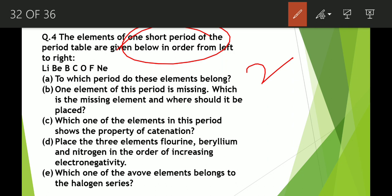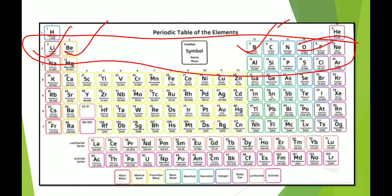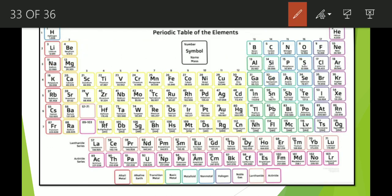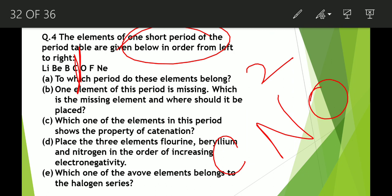One element of this period is missing. Which is the missing element and where should it be placed? After carbon, there should be nitrogen. So nitrogen is the missing element, and it should be placed between carbon and oxygen. Looking at the periodic table, you can confirm that nitrogen is present between carbon and oxygen.